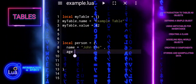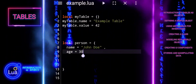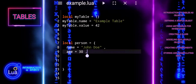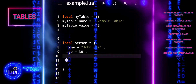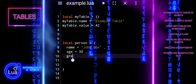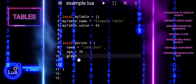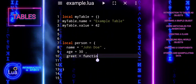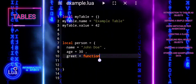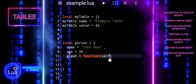This code defines a table person with properties name and age, and a method greet that prints a greeting using the name property. The print statements show how to access the properties and call the method.